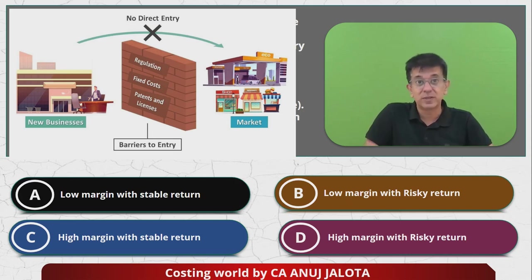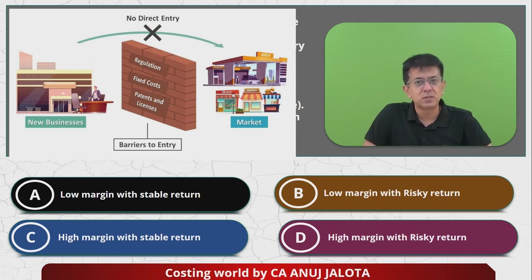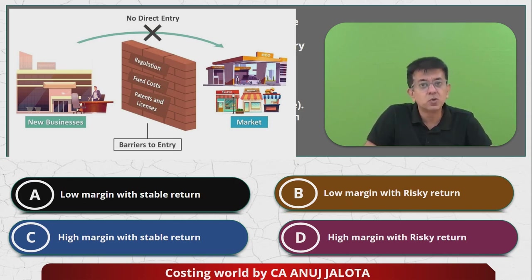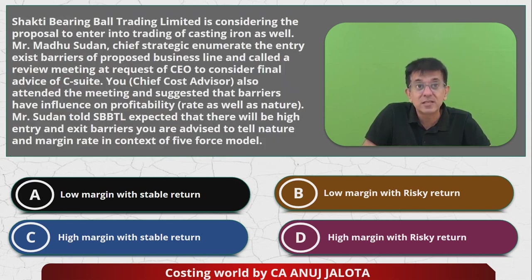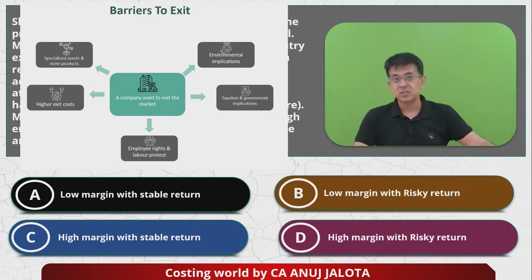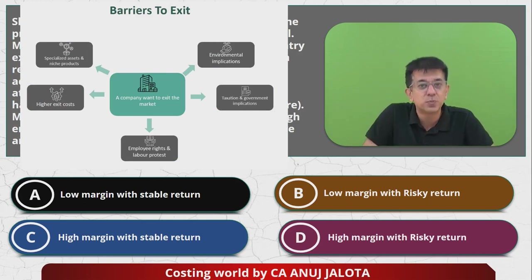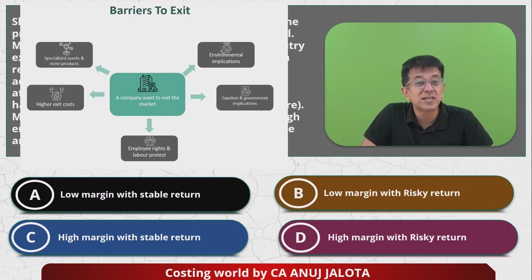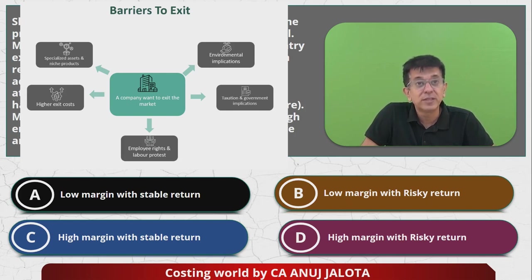These are some entry barriers. But suppose you are already doing a business — can you exit at any moment? If the answer is no, it is because there are barriers to exit as well. The first barrier to exit is specialized assets and niche products. You have a lot of assets which are specialist assets — in case you sell them, you might not get any value for them. Therefore, you will think: why shut down? Let me continue.